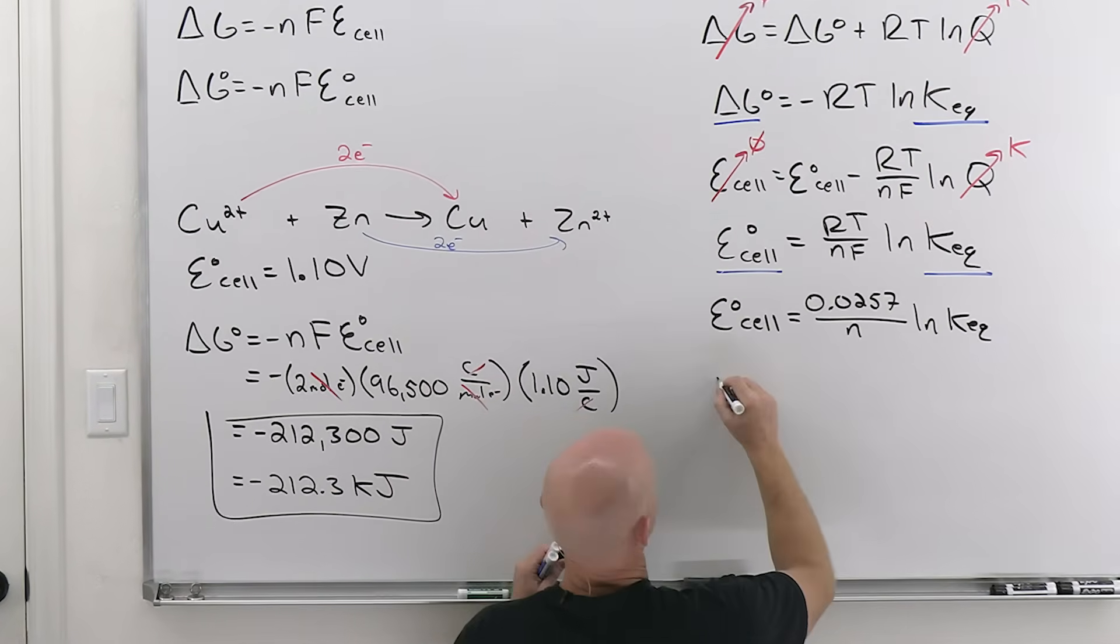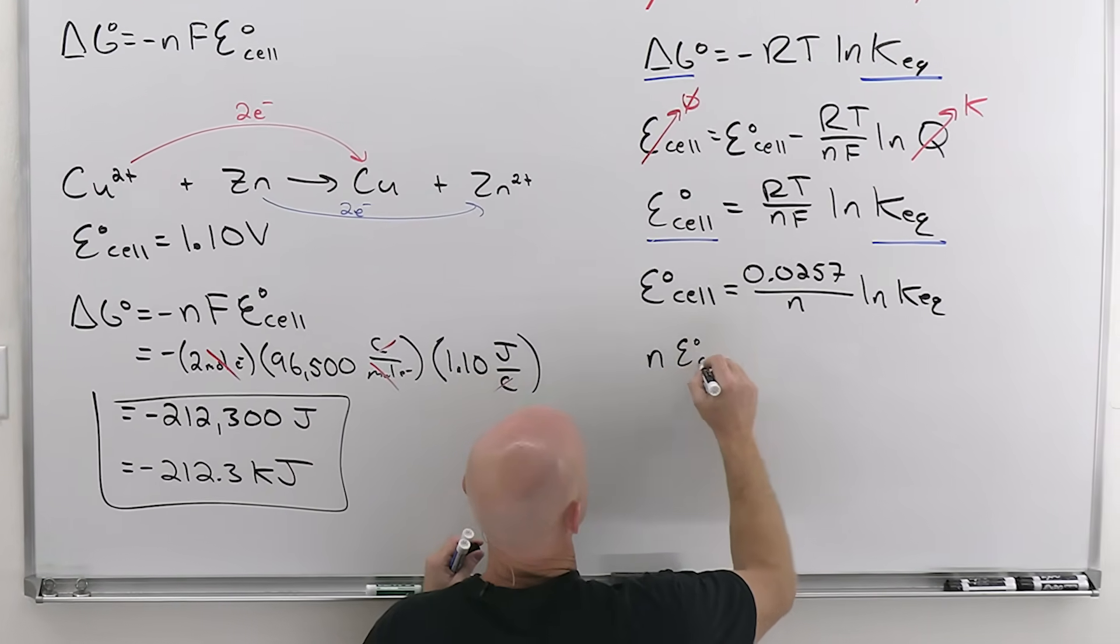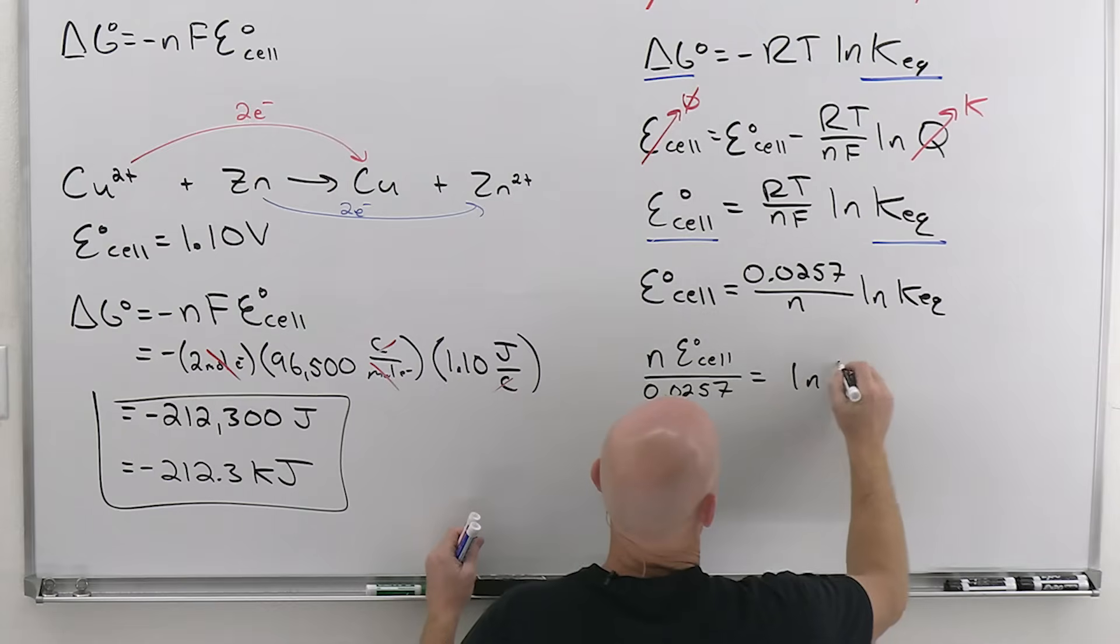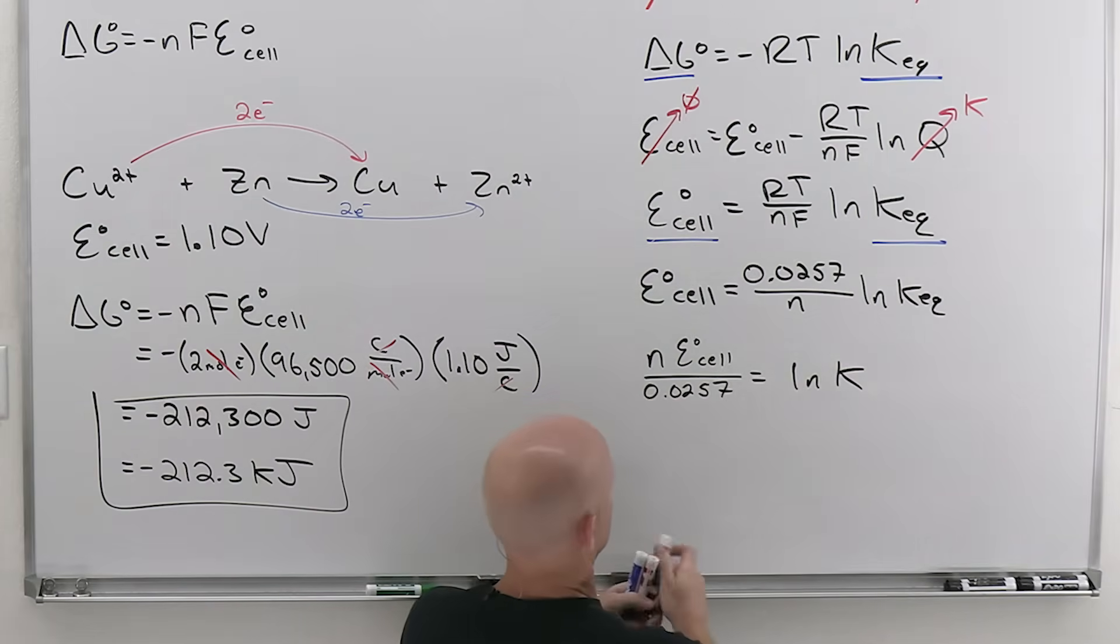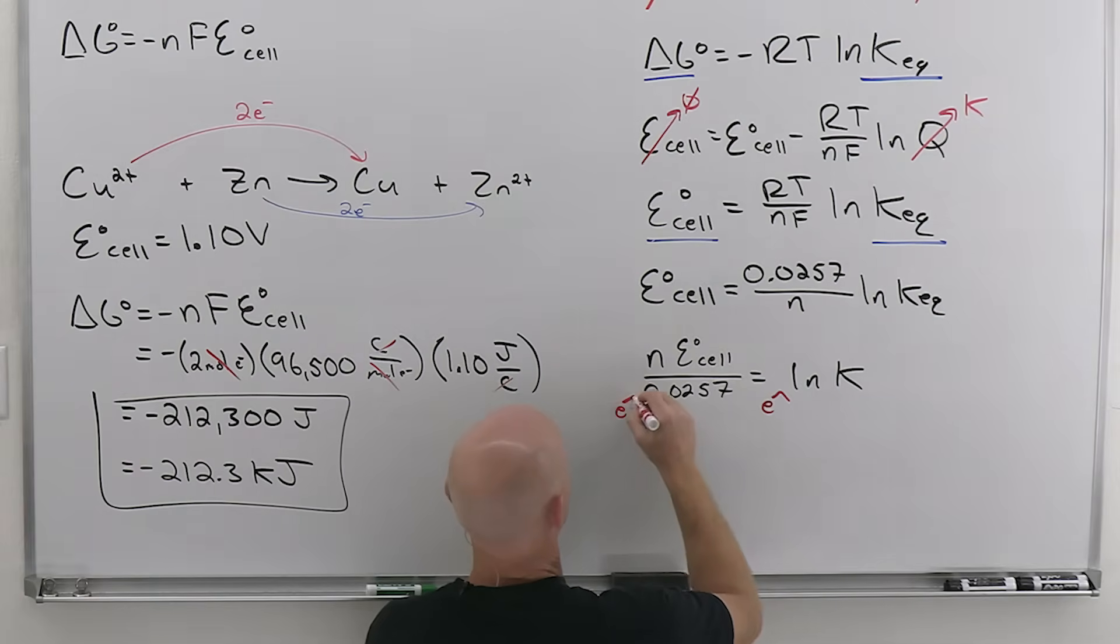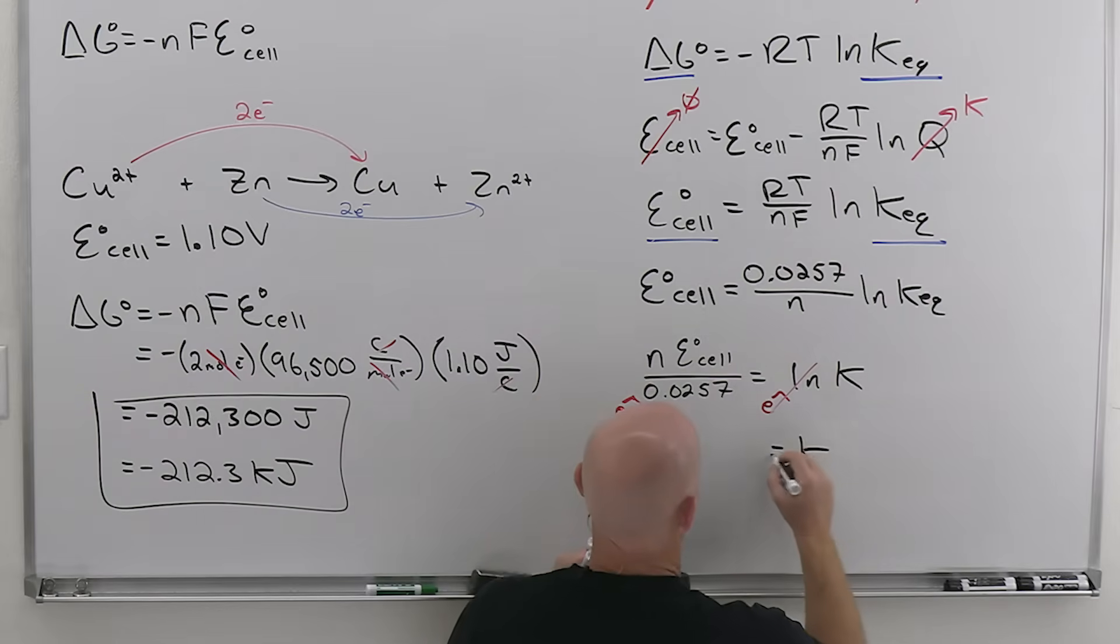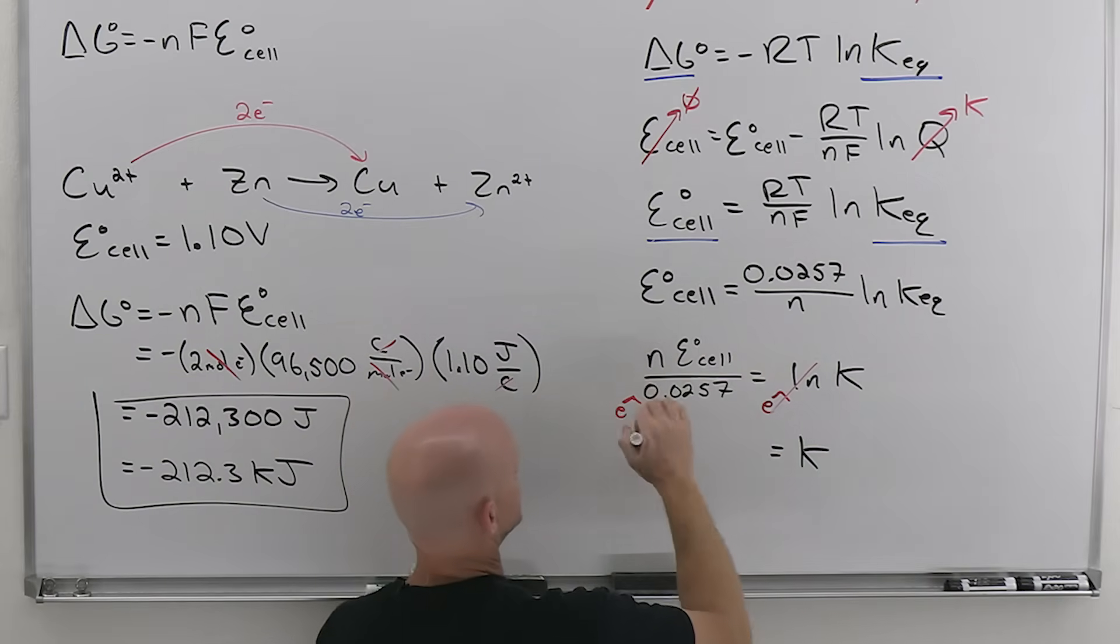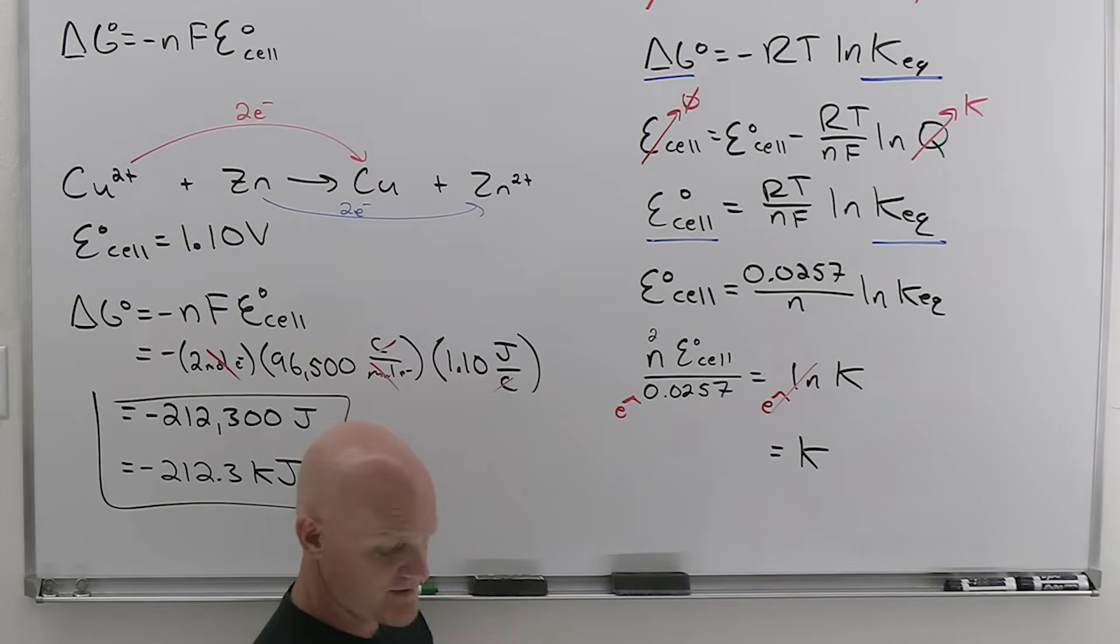And so let's go ahead and calculate that equilibrium constant now, rearrange this a little bit. And so in this case, we're going to have N times E cell all over 0.0257 equals ln of K. And then to get rid of that ln, you might recall, it's e, the exponential, their inverse function. So here they cancel. So we're left with K